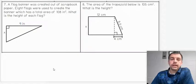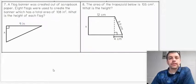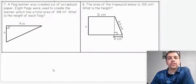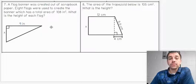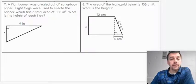Let's move on to number 7. A flag banner was created out of scrapbook paper. 8 flags were used to create the banner, which has a total area of 108 inches squared. What is the height of each flag? Now please notice, we're given some information here that is not what we typically do. First off, they're saying the total area is 108 inches squared. They're also telling us there's 8 flags. This represents 1 flag here. So I don't want this to confuse you.